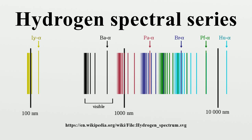The Balmer series is named after Johann Balmer, who discovered the Balmer formula, an empirical equation to predict the Balmer series, in 1885. Balmer lines are historically referred to as H-alpha, H-beta, H-gamma, and so on, where H is the element hydrogen. Four of the Balmer lines are in the technically visible part of the spectrum, with wavelengths longer than 400 nm and shorter than 700 nm. Parts of the Balmer series can be seen in the solar spectrum, and H-alpha is an important line used in astronomy to detect the presence of hydrogen.